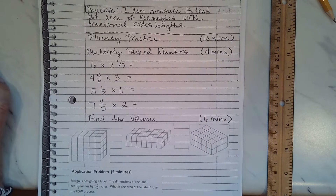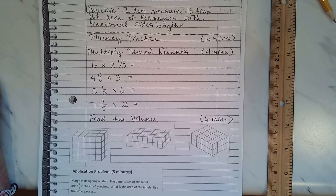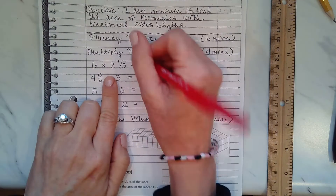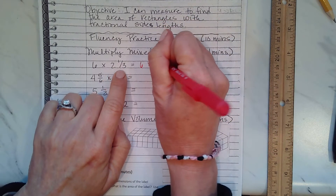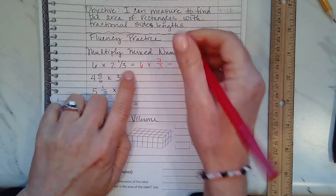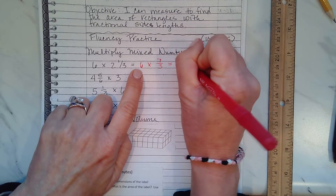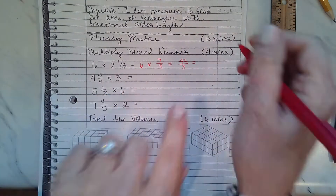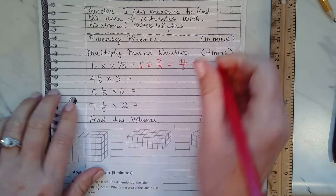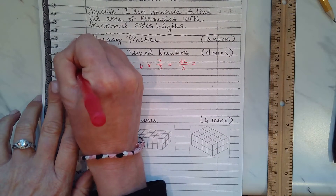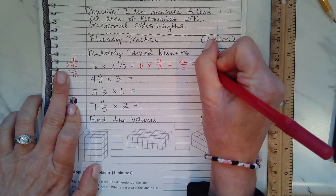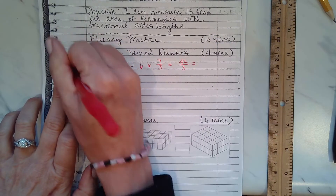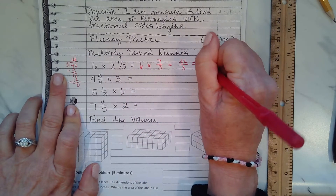I'm going to give you four minutes, then we'll come back and do it together. Now let's check our work. The first problem: 6 times 2 and one-third. That becomes 6 times 7 thirds, which equals 42 thirds. Doing the division: 3 goes into 42 — it goes in 14 times perfectly. So your answer is 14.